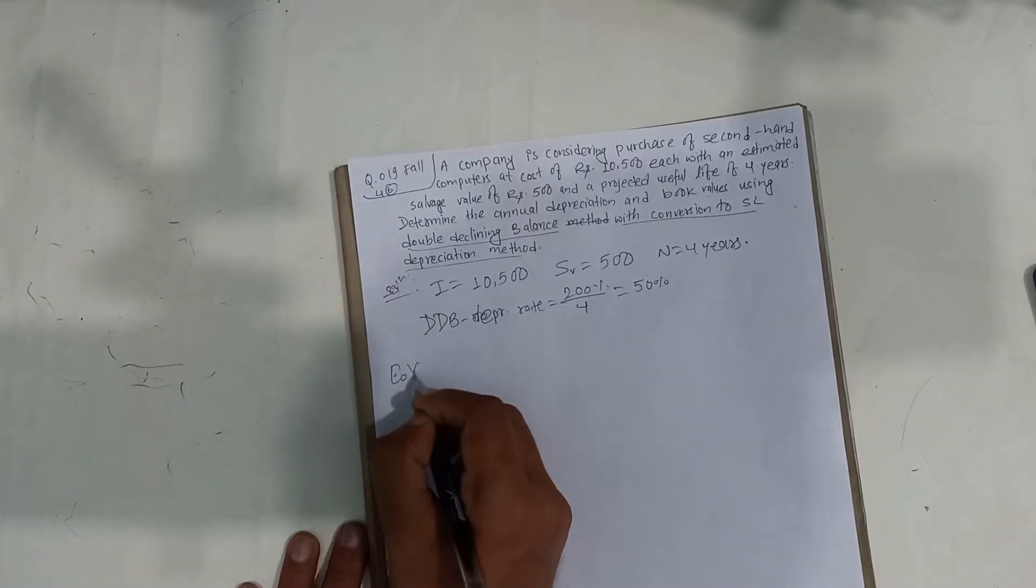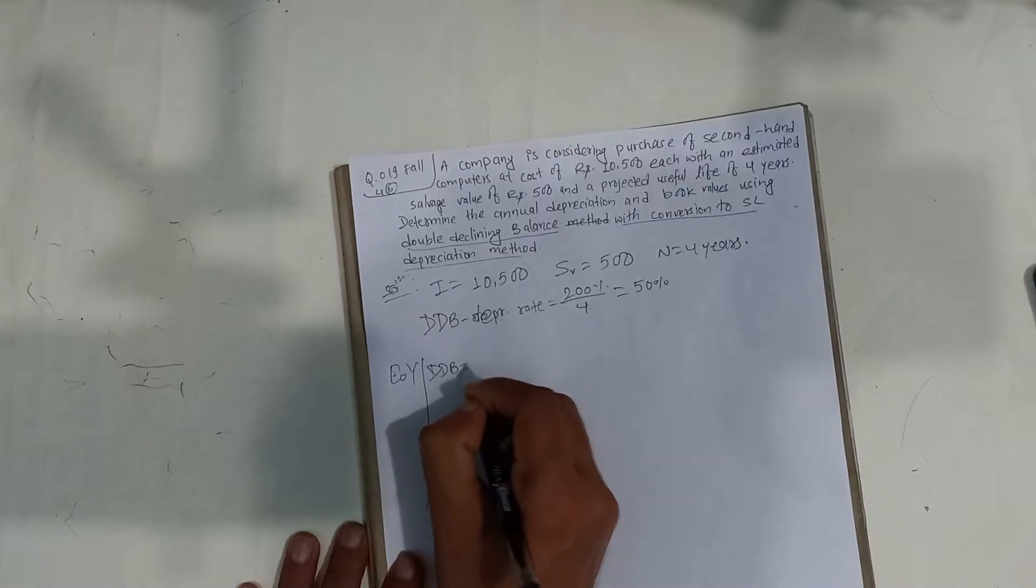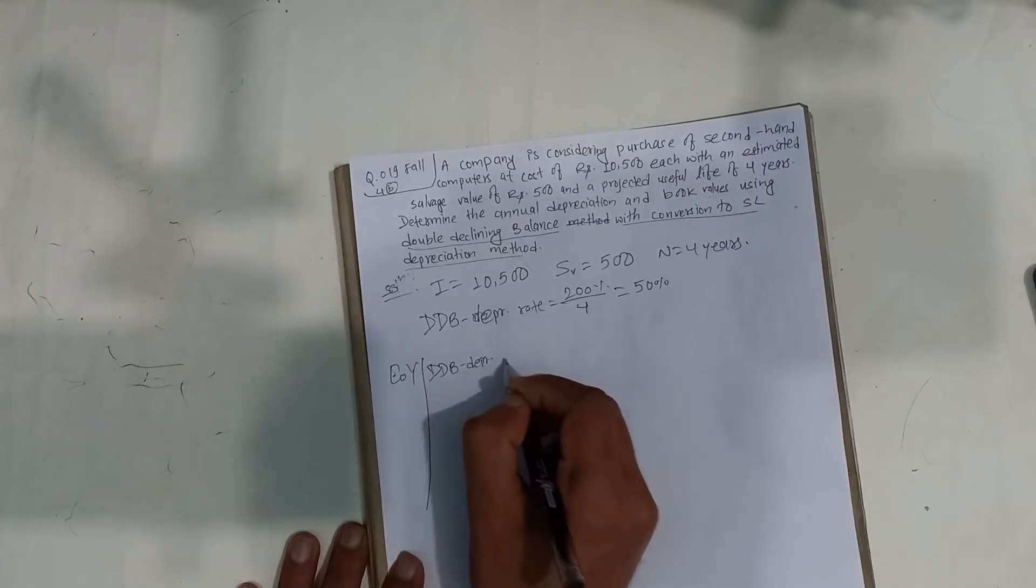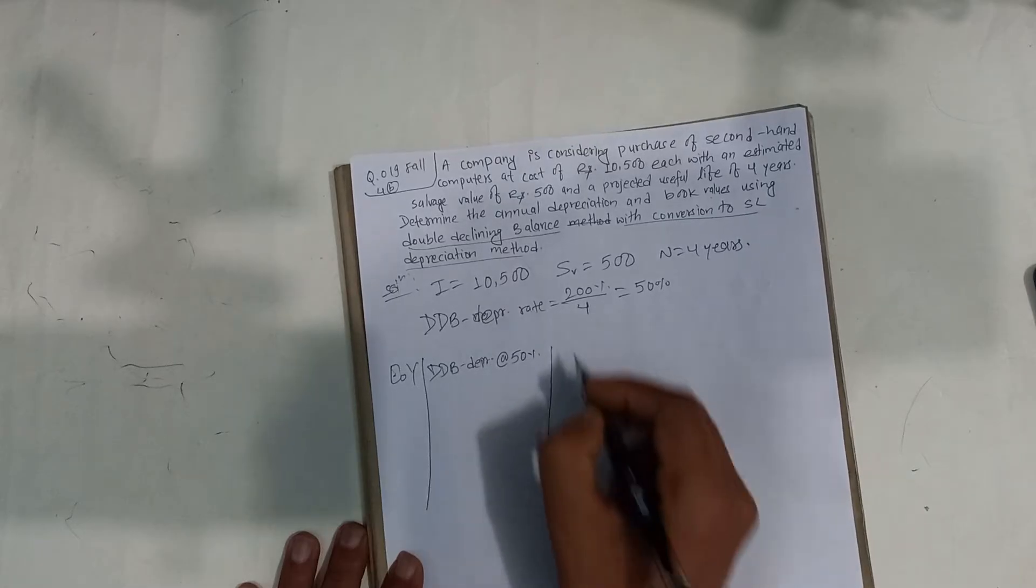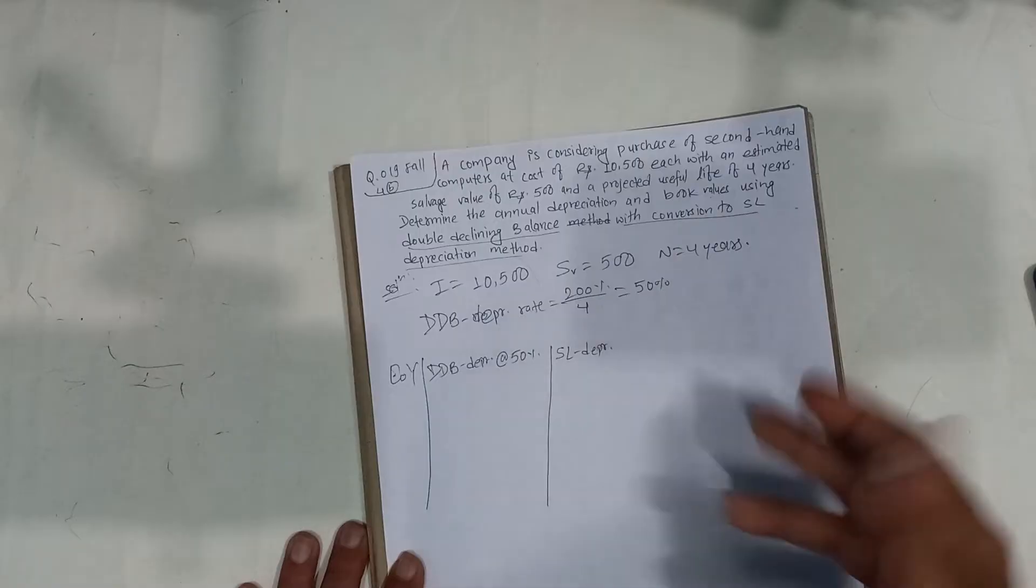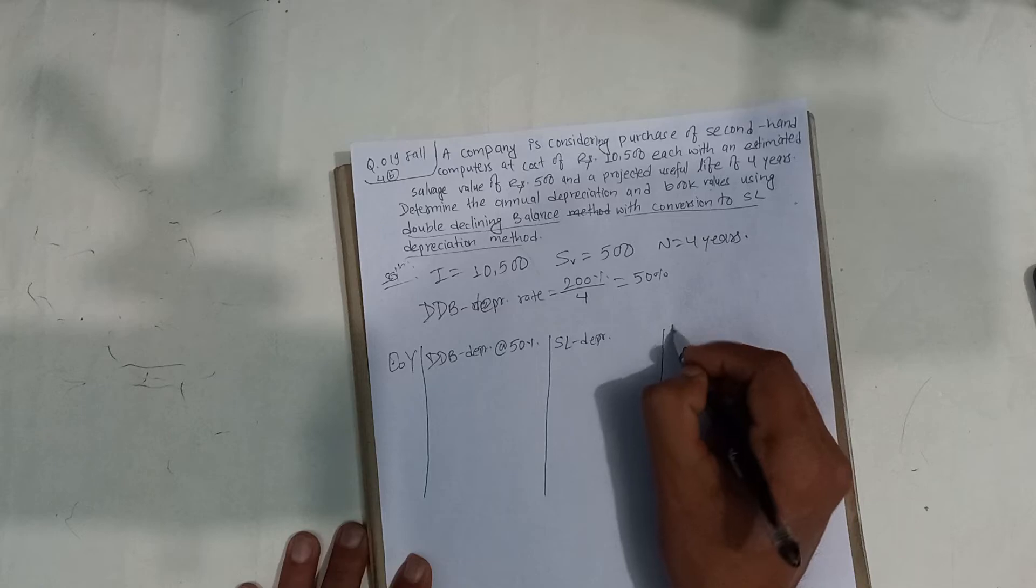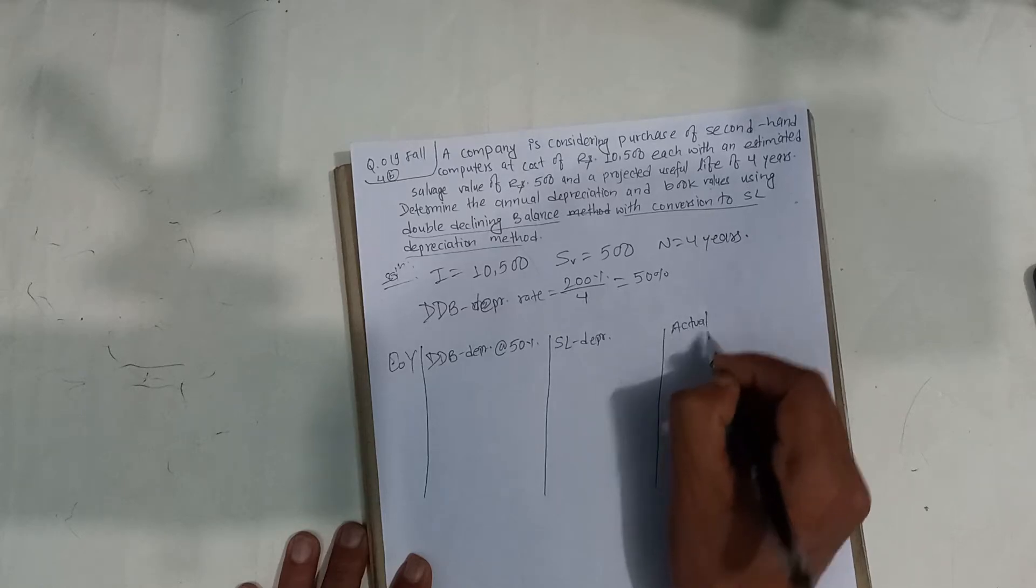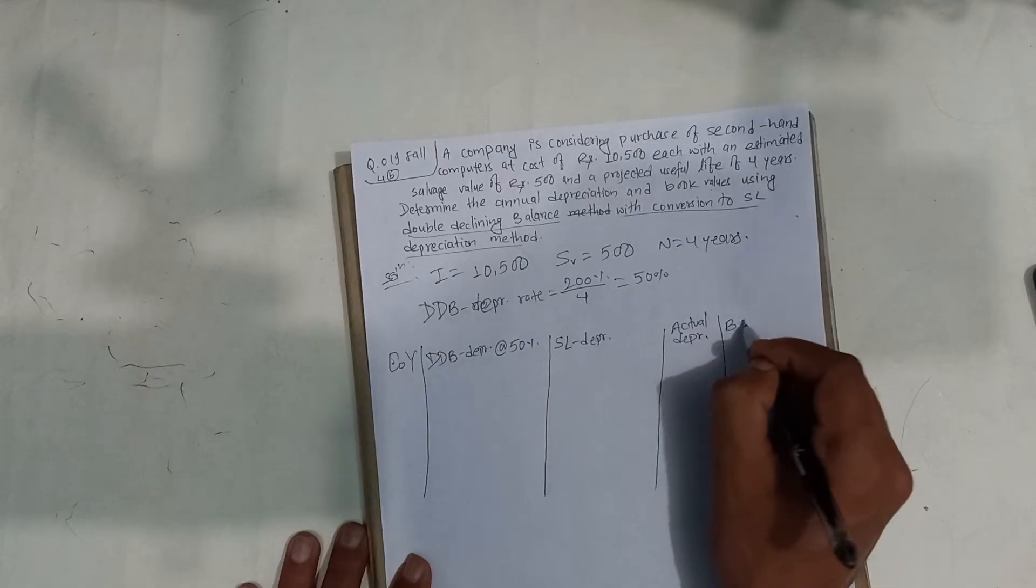I am going to set up the table with columns for end of year, double declining balance depreciation at the rate 50%, and the calculations.